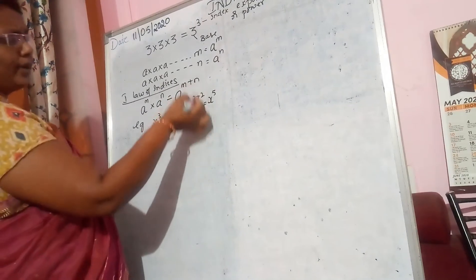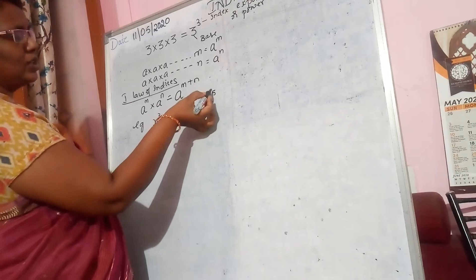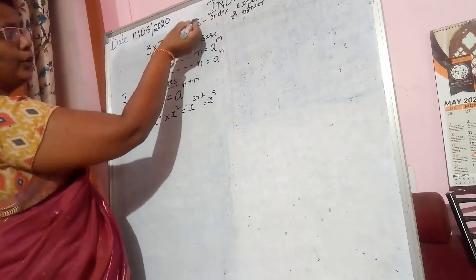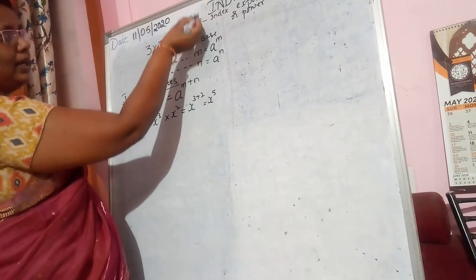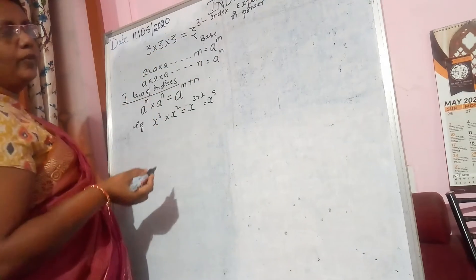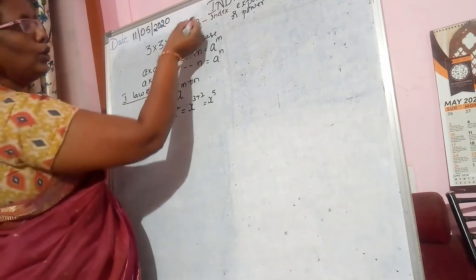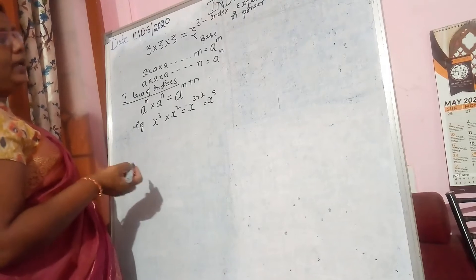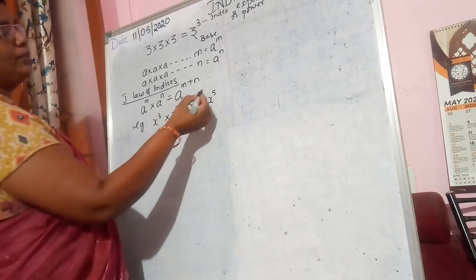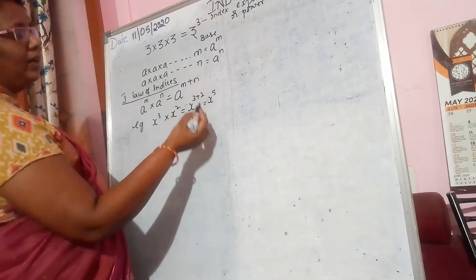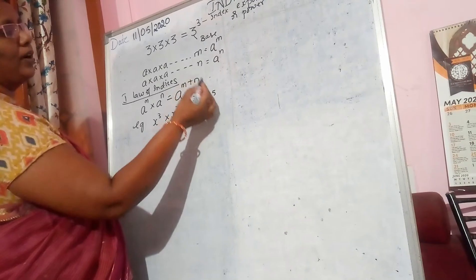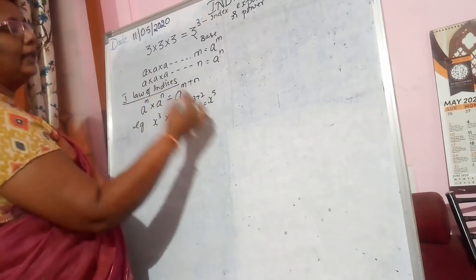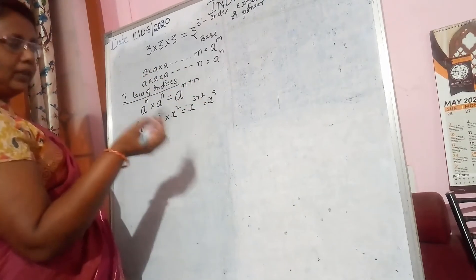How do you read this? It is x raised to the power of 5. When the power is 3 we say cube; when it is 2 we say square — you already know this. But when it comes to 4, 5, 6, 7 and so on, we just say x to the power of 5 or x raised to the power of 4. So this is the first law.